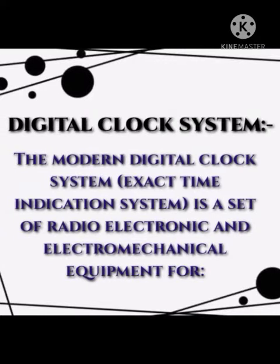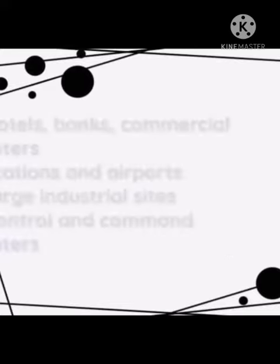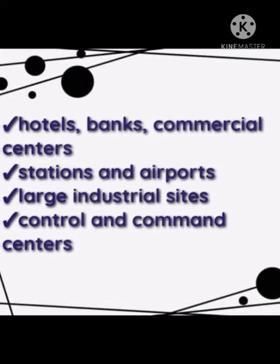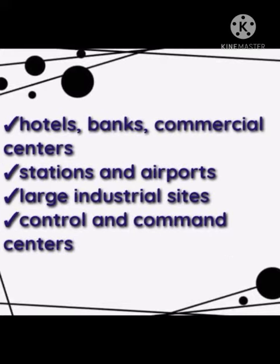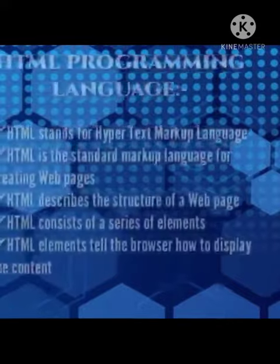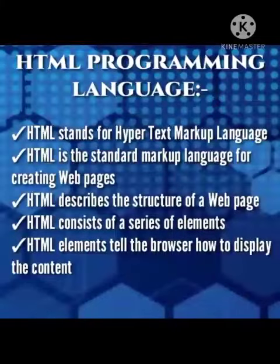The modern digital clock system is used in radio, electronic, and electromechanical equipment for hotels, banks, commercial centers, stations, airports, and large industrial sites.